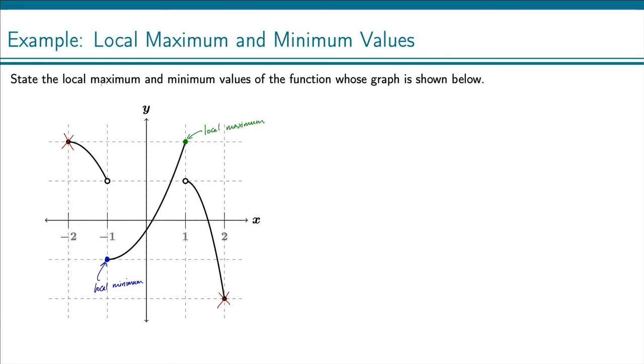Now to actually indicate, to specify what the local maximum and minimum values are, we are going to state that the local minimum value is, we've got a negative 1 right here. Alright, so that right there is a negative 1. So the y value, that's negative 1.